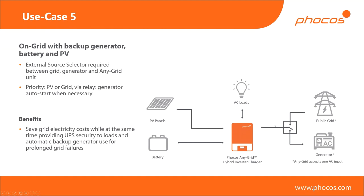You might have the grid available and can prioritize PV if you wish. Even if the grid fails in the middle of the night and you have a small battery, you can still automatically start the AC generator as required to power your loads and potentially charge your battery from the AC generator as well.